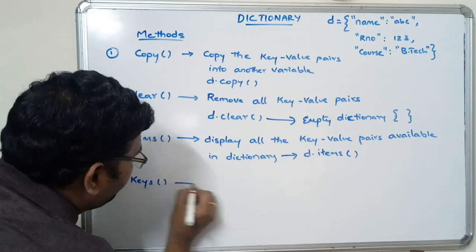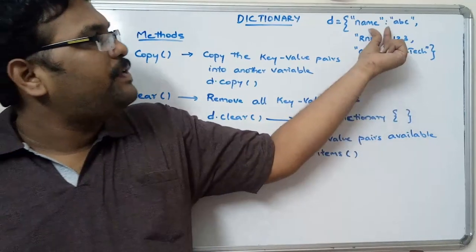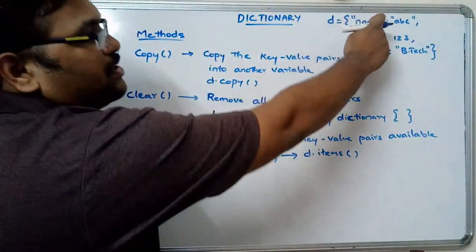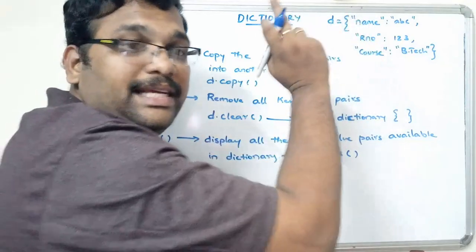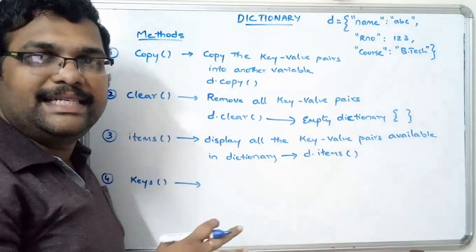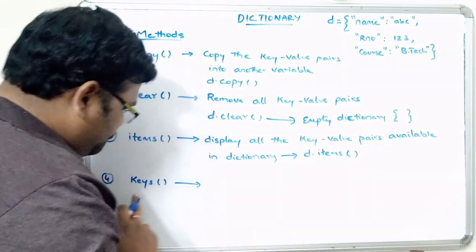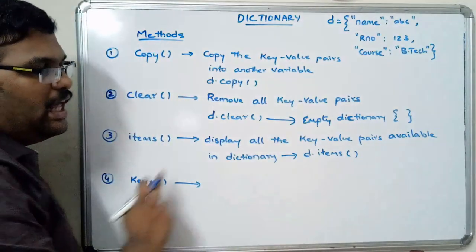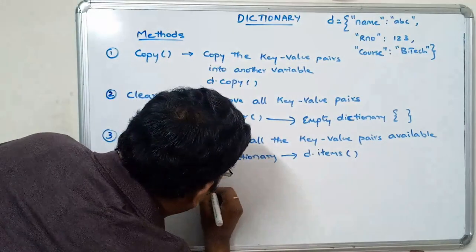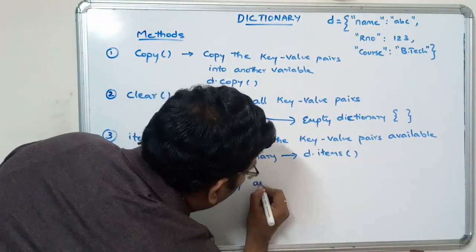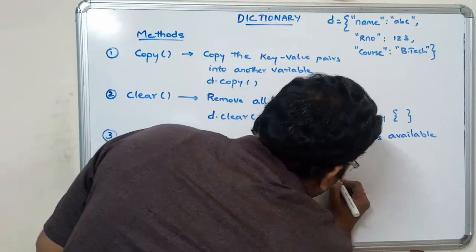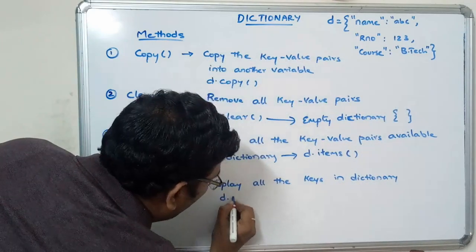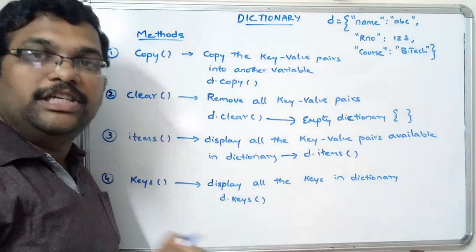Next is keys. In the dictionary concept, the first element in each pair is the key and the second is the value. So d.keys() will give all the keys available in the dictionary. Here also we give zero arguments; it is called with the dictionary name and it will display all the keys in the dictionary. The syntax is d.keys().